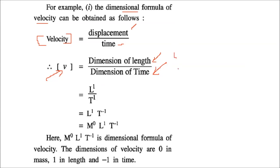That gives L by T, and since there is only one length and one time, we write L to the power 1 and T to the power 1. When T is moved to the numerator, the power becomes minus 1: L to the power 1, T to the power minus 1. We always include M, and since there is no M, we write M to the power 0. So the dimensional formula of velocity is M⁰ L¹ T⁻¹.